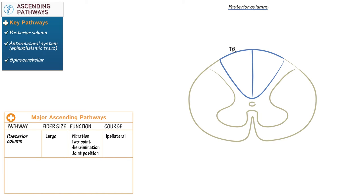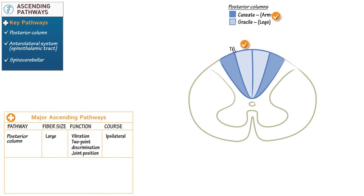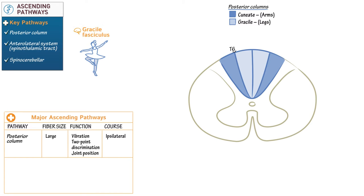The cuneate fasciculus carries sensory information from the upper body — from T6 and above, for instance the arms. The gracile fasciculus carries sensory information from the lower body — from below T6, for instance the legs. As a mnemonic for the gracile fasciculus, draw a ballerina: ballerinas need graceful legs, which helps associate gracile with legs.